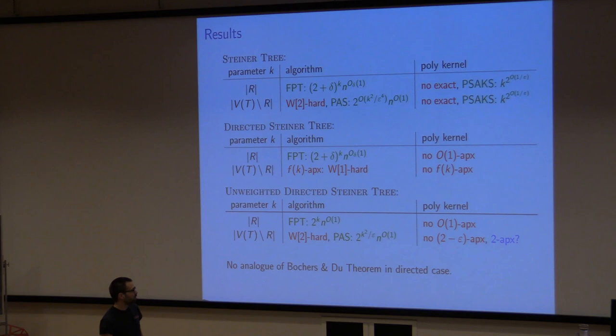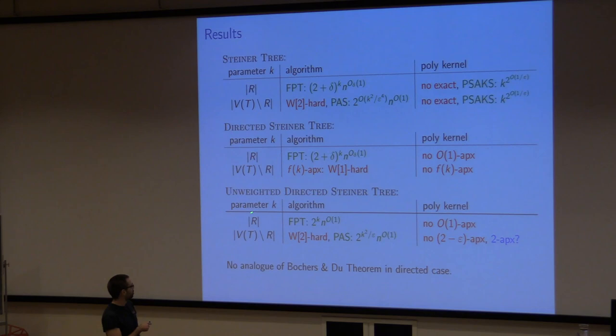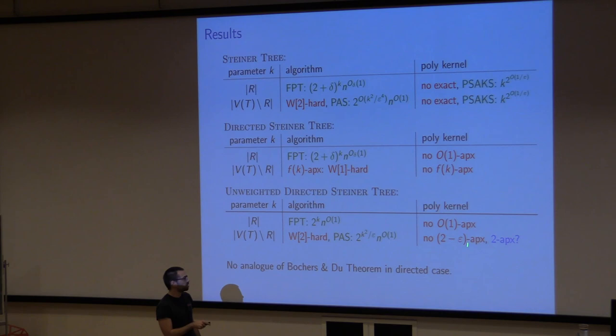I was quite excited about this — it would be really cool to show there is a 2-approximate polynomial kernel here. However, by now I'm a bit skeptical it will work out, because usually this parameter is easier than the number-of-terminals parameter. So I would now say that probably you can prove a similar lower bound as for the number-of-terminals parameter.